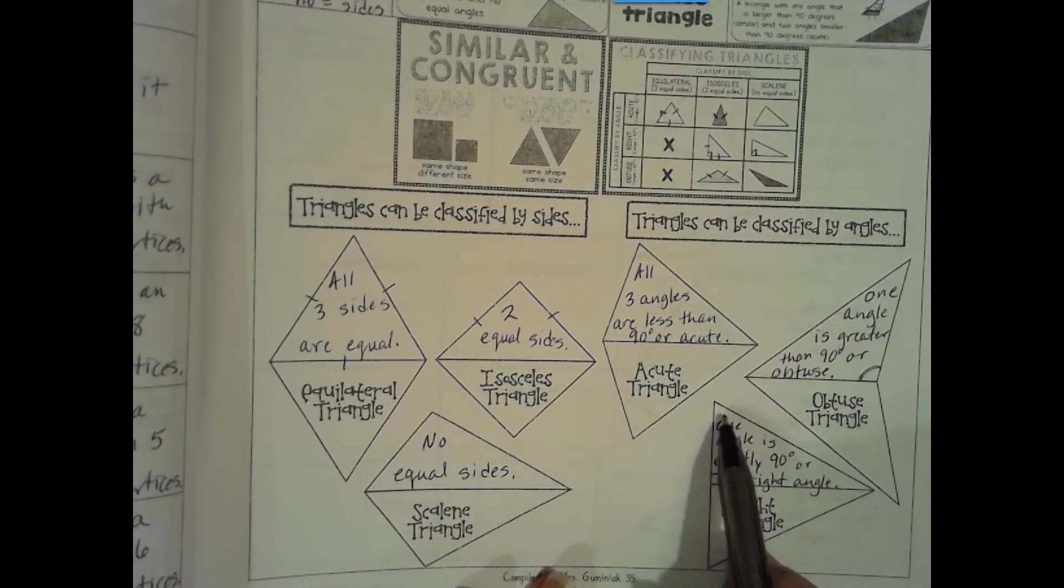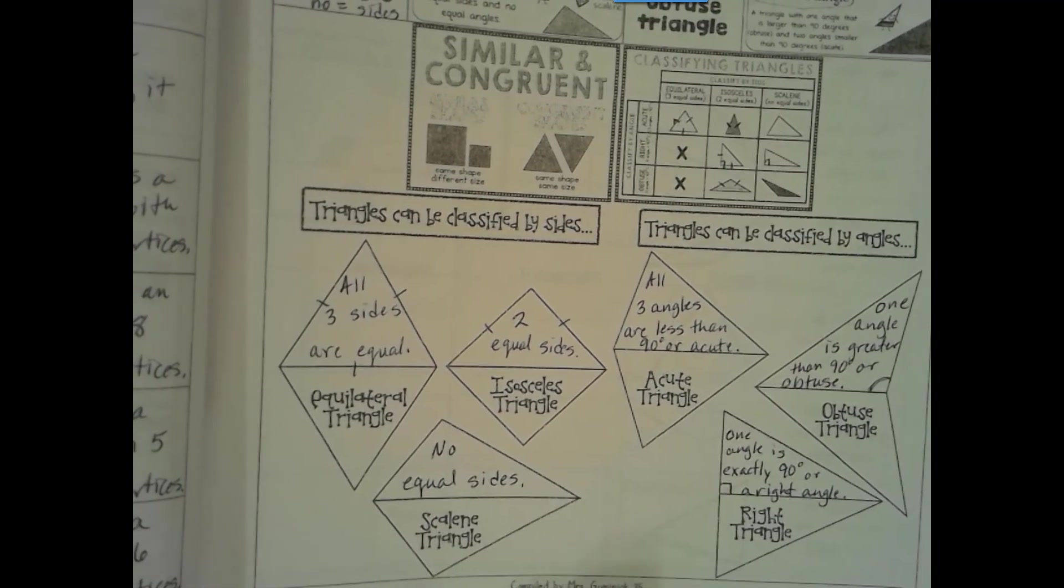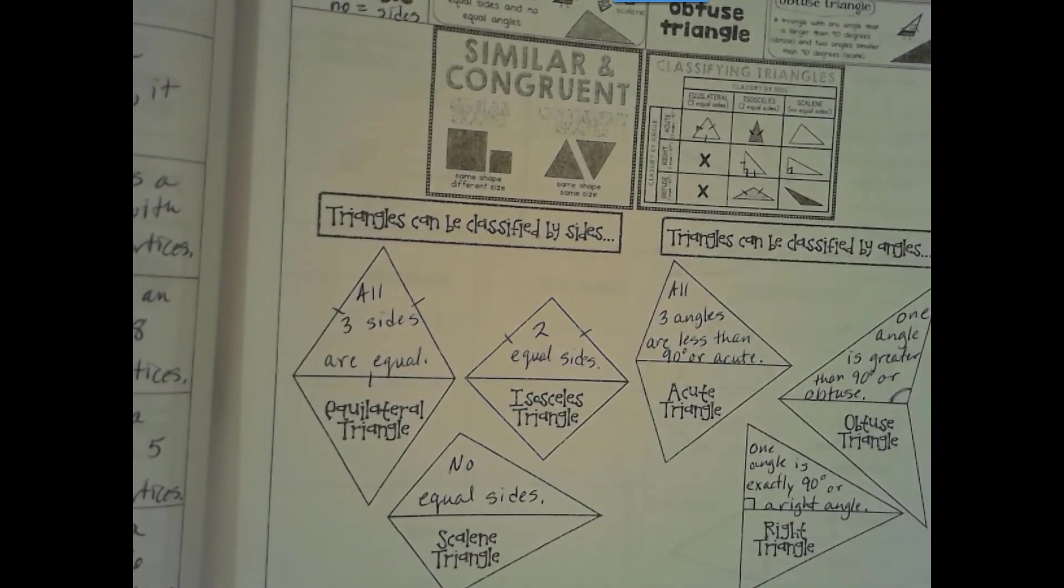So just one, because the other two on both of these will be acute. So one right, one obtuse makes it either a right triangle or an obtuse triangle. All right, so let's practice more with our three column notes and classifying our triangles.